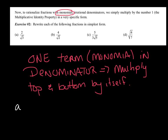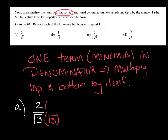Let me walk you through a few examples. Letter A: 2 over radical 3. This is not considered simplified because of the radical in the bottom. Now, this is a monomial — it's one term. So we're going to multiply the top and bottom by itself. Right next to it, you put times radical 3 on the top as well. We're really multiplying by 1, because radical 3 over radical 3 is 1 — any number divided by itself.